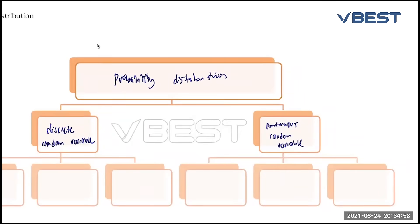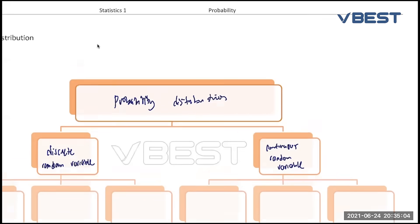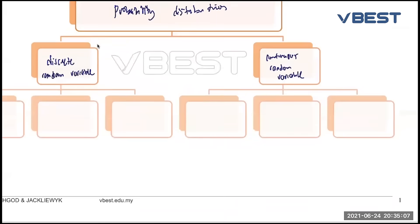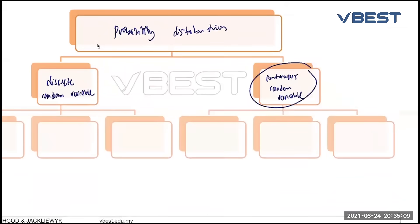You have heard about threshold. Oh, this year the threshold is very low, a lot of people get A-star or something like that. Why, what, how do they do that? Because all these things is actually from continuous random variable because students results are starting from zero percent until hundred percent, different marks you can get.